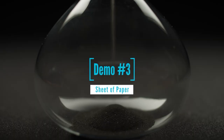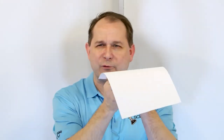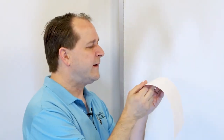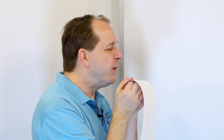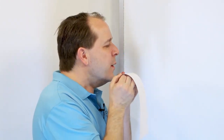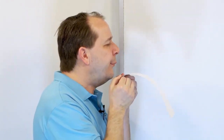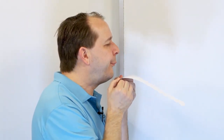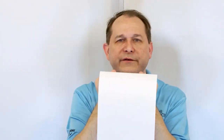The Bernoulli principle for demo number four just uses an ordinary sheet of paper. I'm going to turn sideways and blow with my mouth over the top. You see, when I started to blow, instead of being blown down, the paper actually rises.